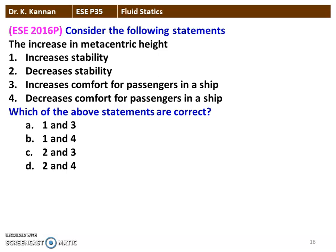The first question from the 2016 question paper. Consider the following statements: the increase in metacentric height increases stability, decreases stability, increases the comfort for the passenger in a ship, decreases comfort for the passenger in a ship. Which of the above statements are correct? The correct option is 1 and 4 — increases stability, decreases comfort of the passenger in a ship. That is the correct option for increase in metacentric height.